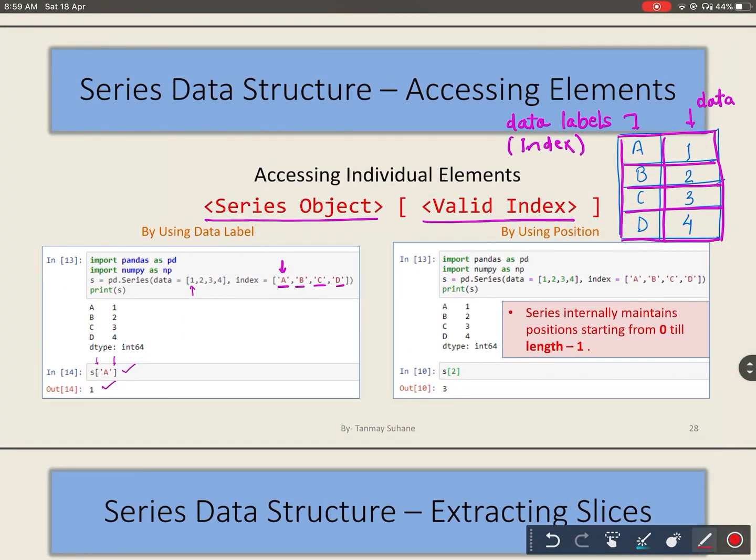Python internally manages or creates the position of each element in the Series. Starting from the first data label, it gives the position 0, 1, 2, 3, and so on.